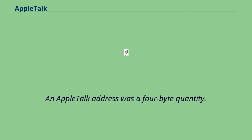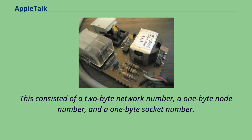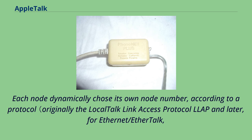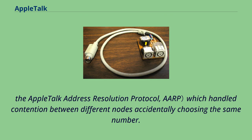Of these, only the network number required any configuration, being obtained from a router. Each node dynamically chose its own node number according to a protocol — originally the LocalTalk Link Access Protocol (LLAP) and later, for Ethernet/EtherTalk, the AppleTalk Address Resolution Protocol (AARP) — which handled contention between different nodes accidentally choosing the same number. A few well-known socket numbers were reserved for special purposes specific to the AppleTalk protocol itself.